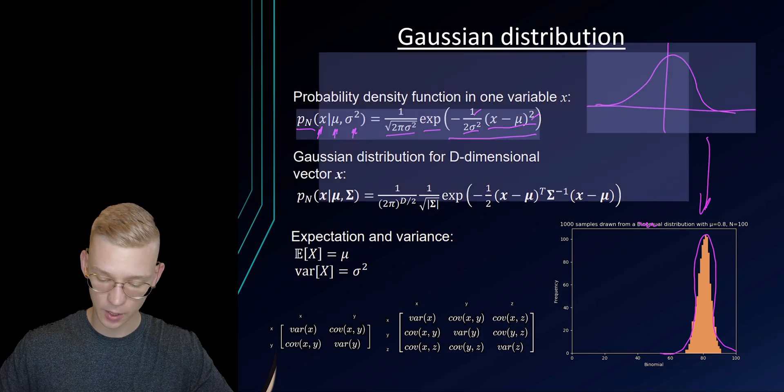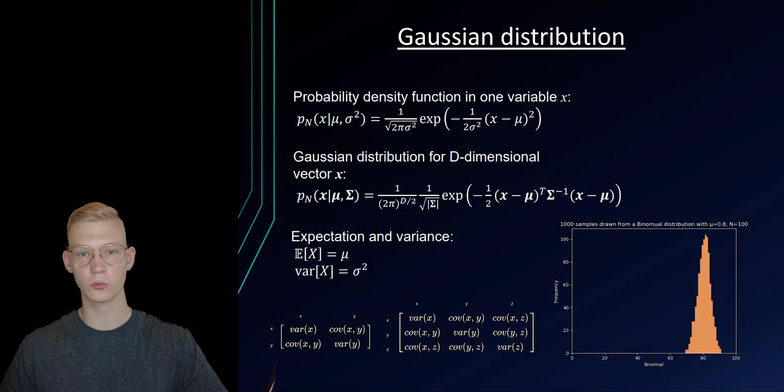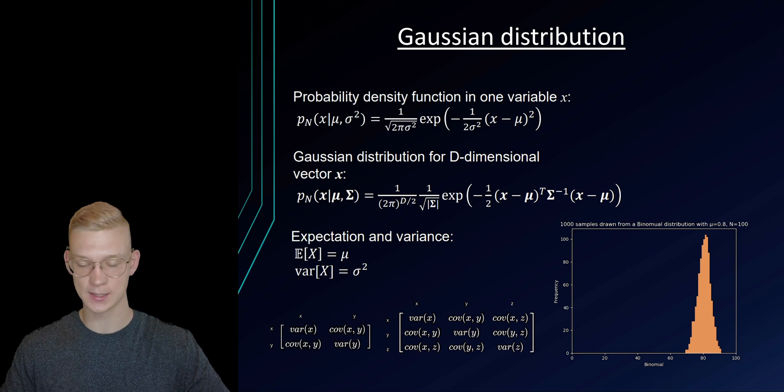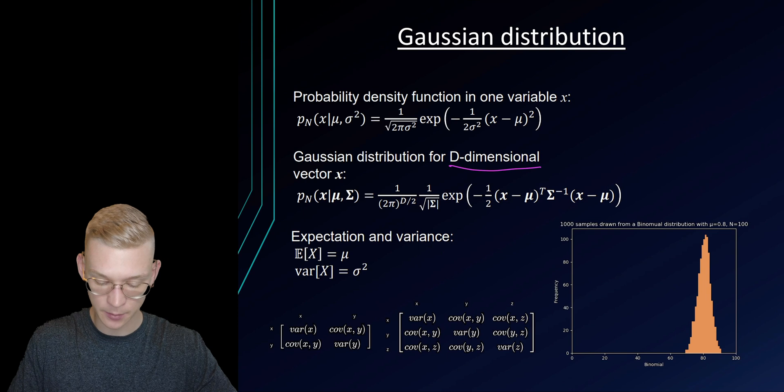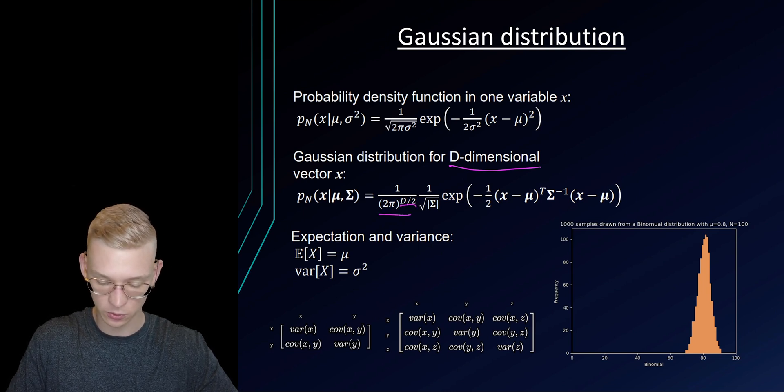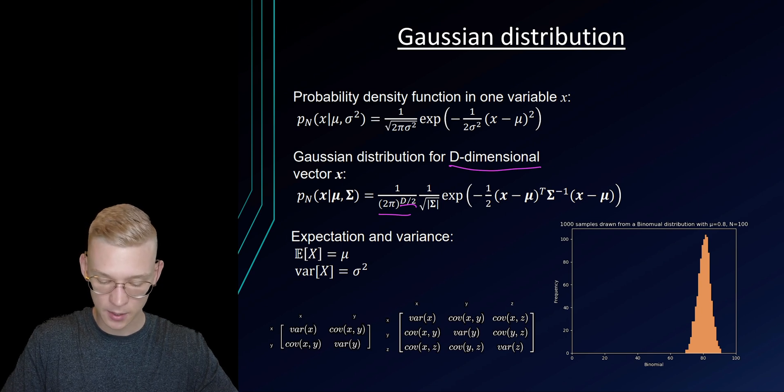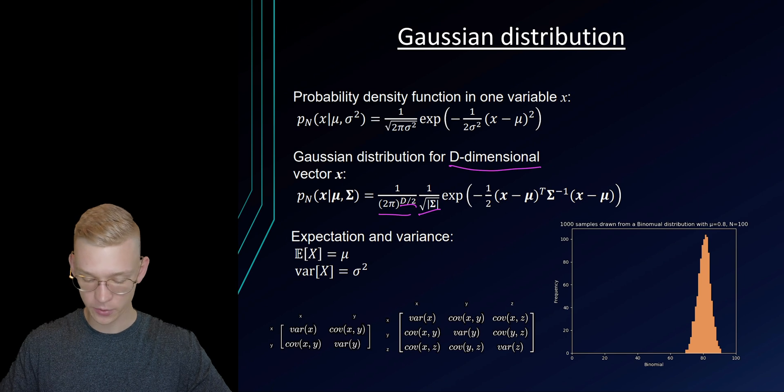Because we will talk about random variables that are multi-dimensional, so we have random variables x and y, we can also get the Gaussian distribution for a d-dimensional distribution. So we have 1 over pi to the power of d divided by 2, where d is our dimension, times the root of the determinant of our covariance matrix.